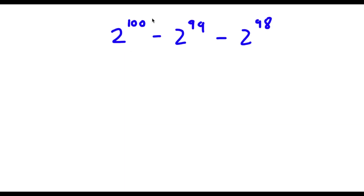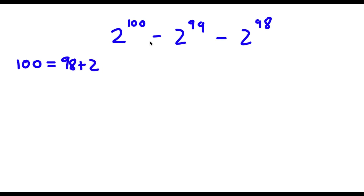Alright, so I have 2 to the power of 100 minus 2 to the power of 99 minus 2 to the power of 98. So first off, 100 is the same thing as 98 plus 2. 99 is the same thing as 98 plus 1. And 98, that's the same thing as 98. So now if I place these in for the exponents...